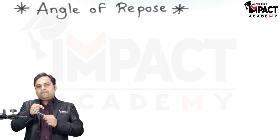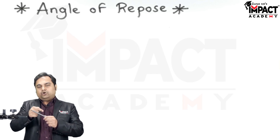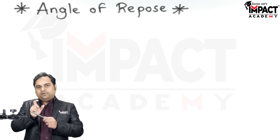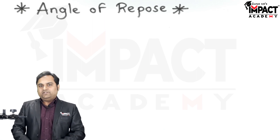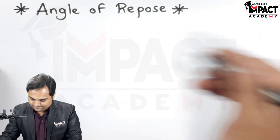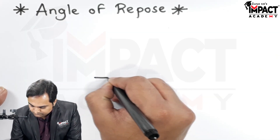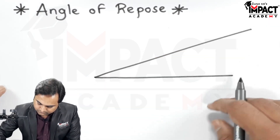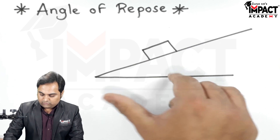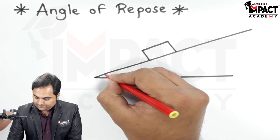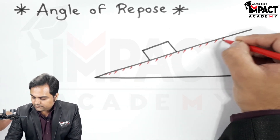It is a limiting angle which gives us the value of the force, or we can say when the body is in limiting equilibrium. Limiting equilibrium means it is just on the point of sliding down. I will explain it with the help of a diagram. Here is a block which is kept on this surface.